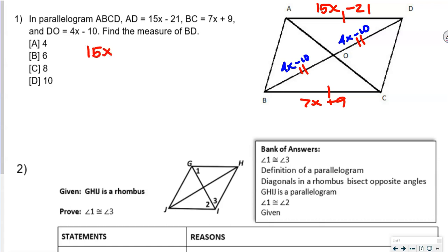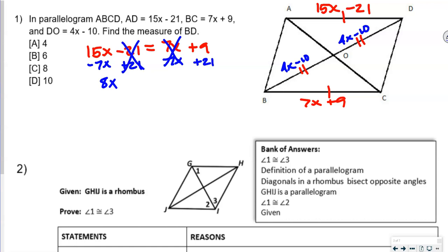So 15x minus 21 equals 7x plus 9. We subtract 7x from both sides, leaving 8x on the left. Then we add 21 to both sides, giving 8x equals 30. Dividing both sides by 8, we get X equals 3.75.